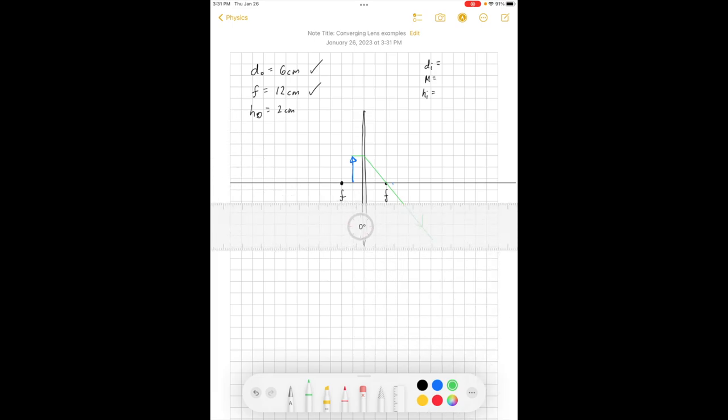The other ray would look kind of like that in reverse. It would look like if the ray were to first pass through the focus on the same side, it would hit the lens and then go parallel to the axis.